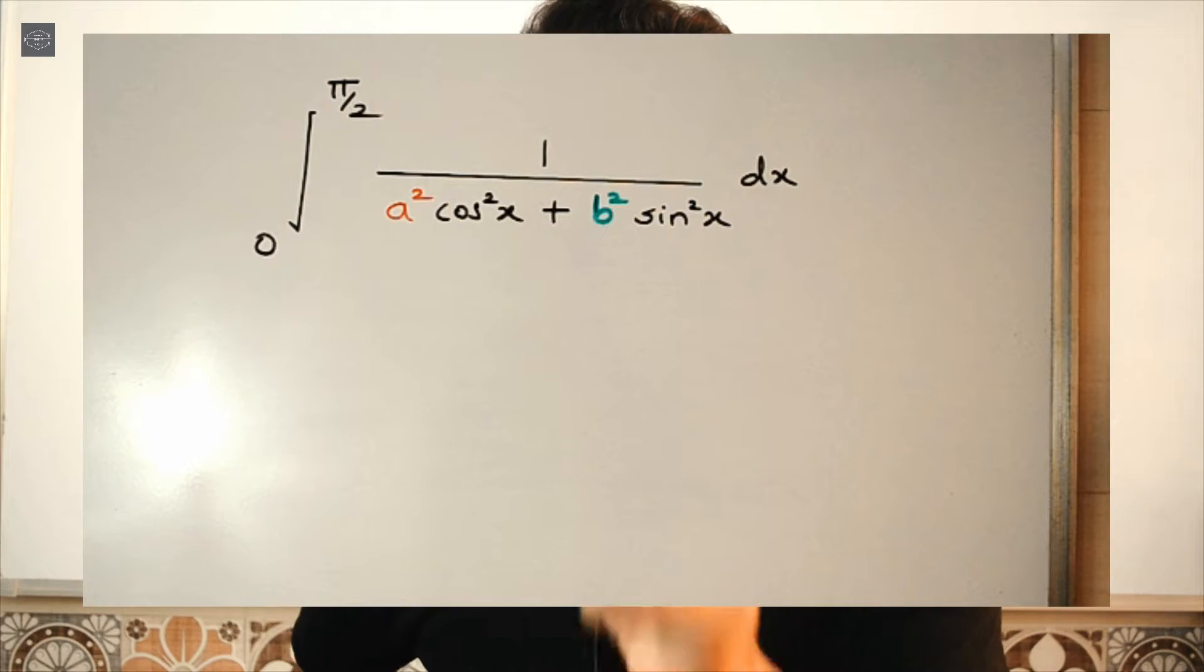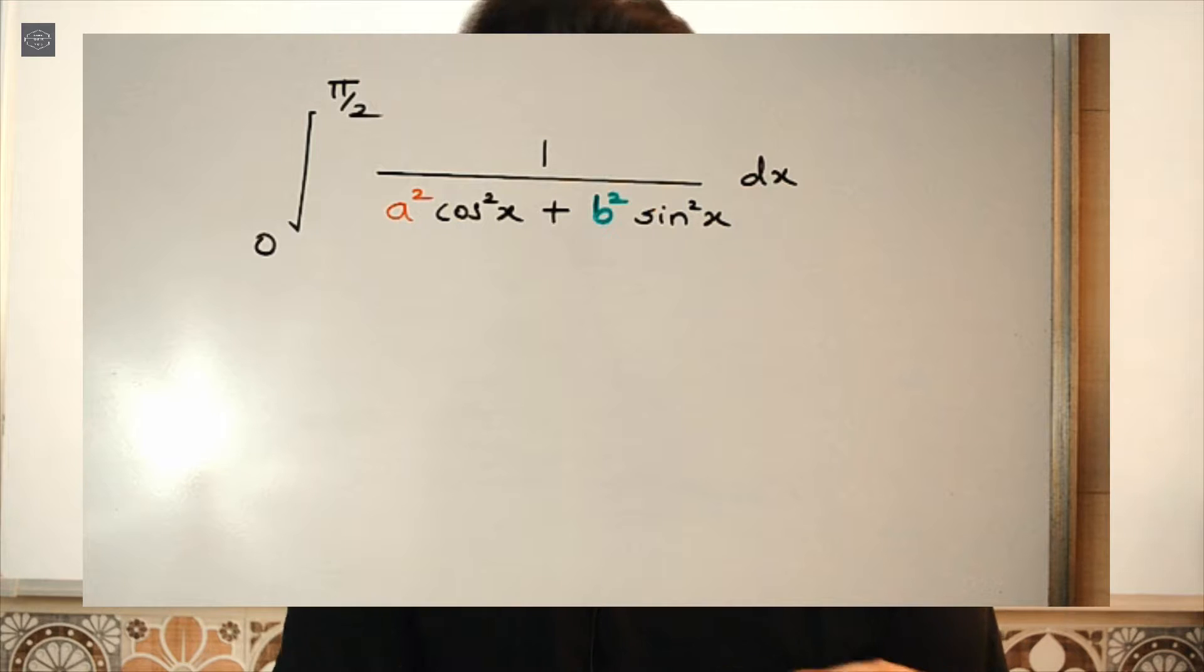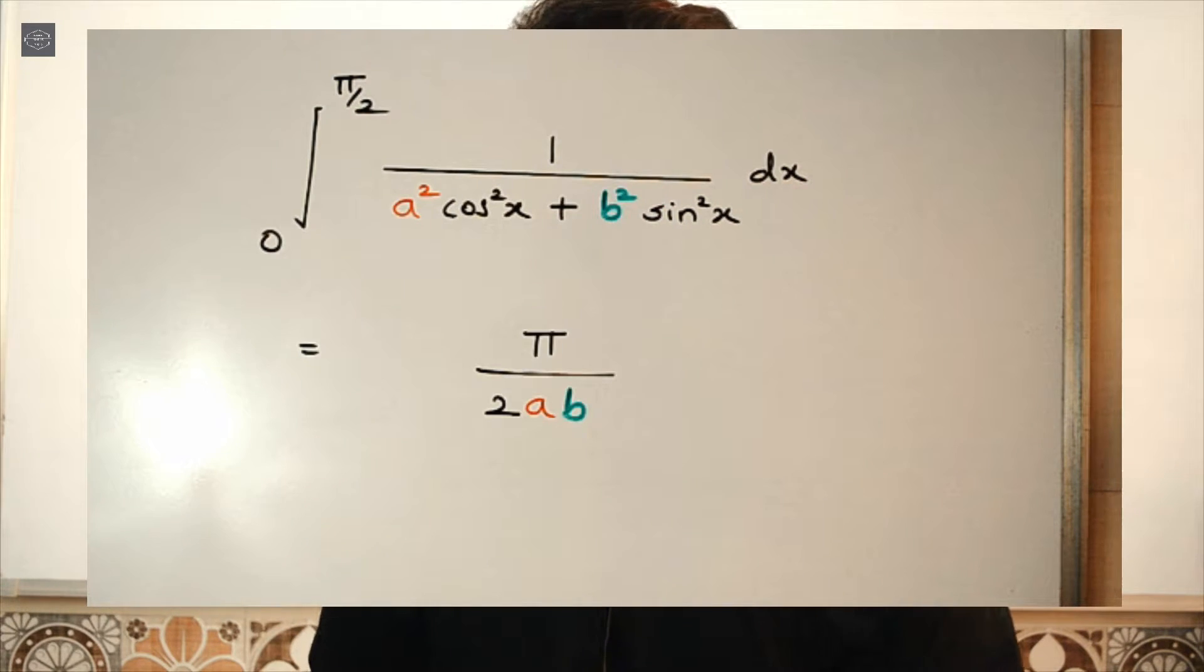Alright guys, so here we go. The shortcut says whenever we are dealing with integrals of the form 0 to π/2, 1 upon (a²cos²x + b²sin²x) dx, then the value of the integral is π/(2ab).